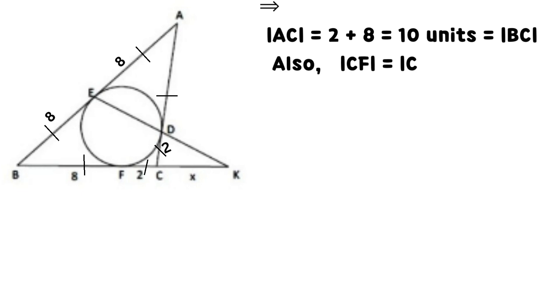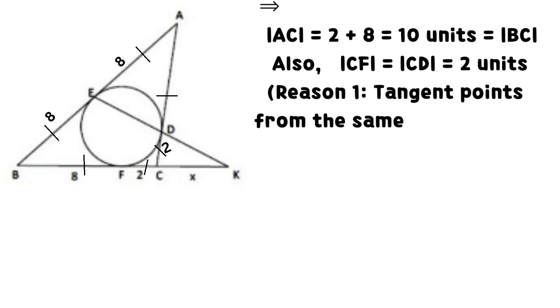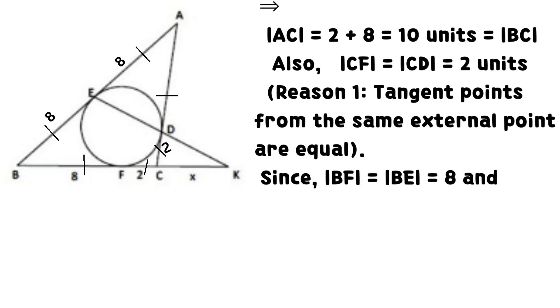It implies that AC equals 10 units which equals BC. Also, CF equals CD which equals 2 units. Reason 1: tangent points from the same external point are equal.